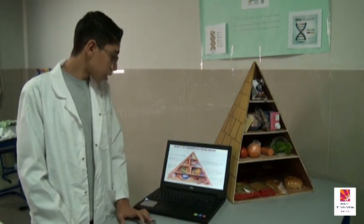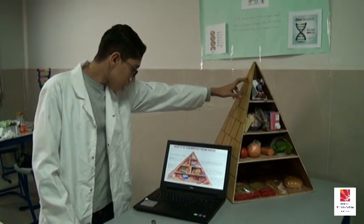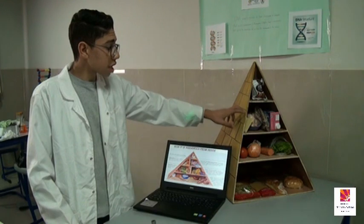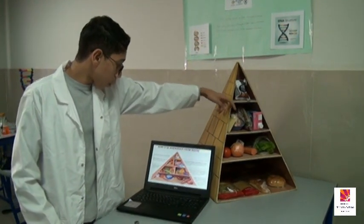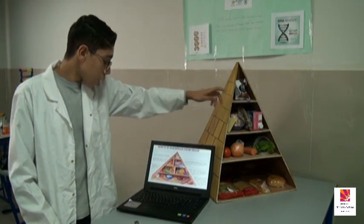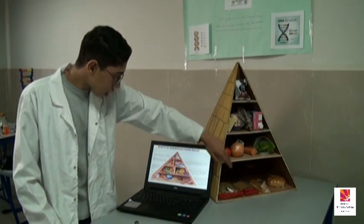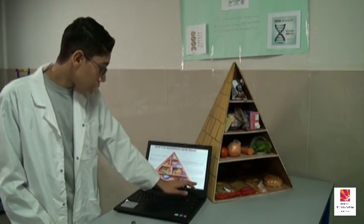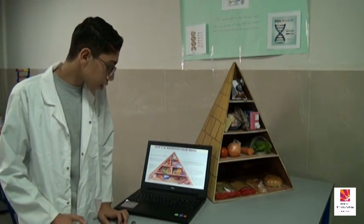Arranged from the inside outward: first we have fats, oils, and sweets. Second, milk products — such as milk, yogurt, and cheese. We also have meats and other high-protein foods, then vegetables and fruits. At the last section, we have grains, which include whole grain pretzels and English muffins.